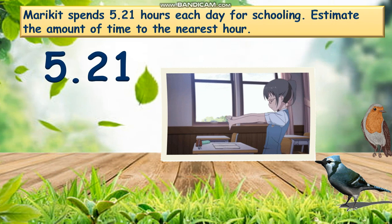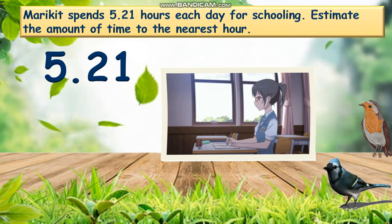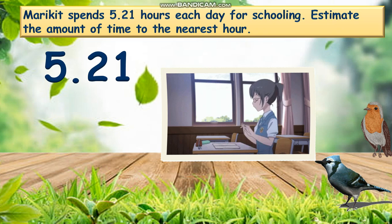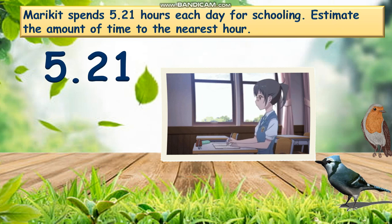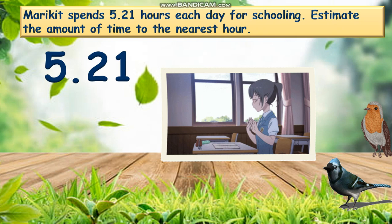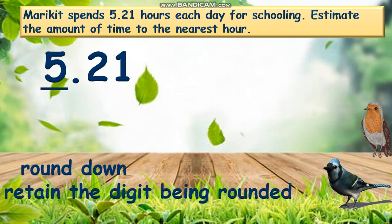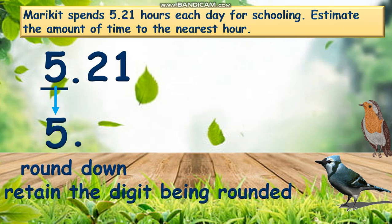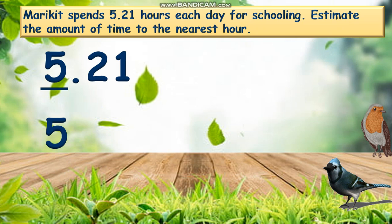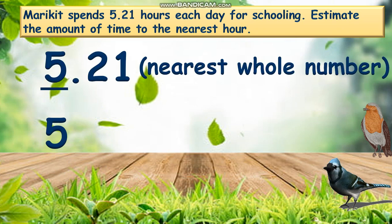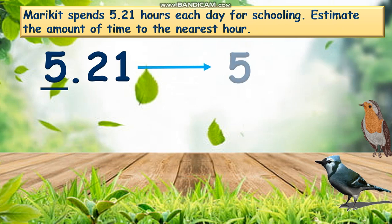Let's have another example. Merricket spends 5 and 21 hundredths hours each day for schooling. Estimate the amount of time to the nearest hour. Because our estimation is to the nearest hour, it means that we can estimate in whole numbers. So 5 is our estimated digit, and the digit to the right of it is 2, which is less than 5, so let's round down. 5 will retain, and the digits to their right will be 0s, or we can drop it. To round off 5 and 21 hundredths to the nearest whole number, the answer is 5. Therefore, Merricket studies for 5 hours a day.